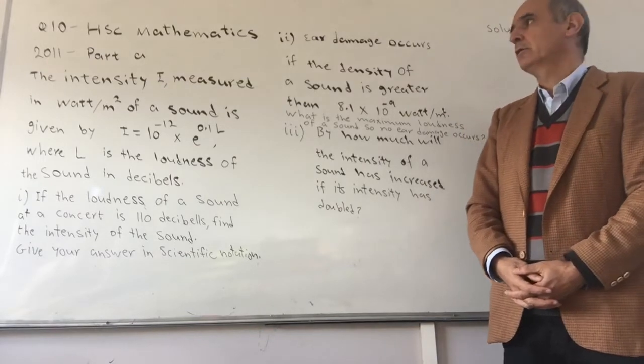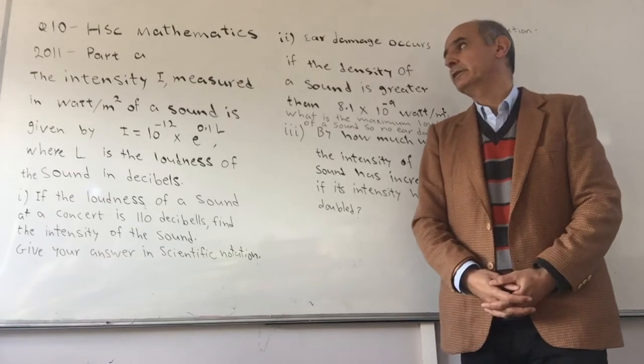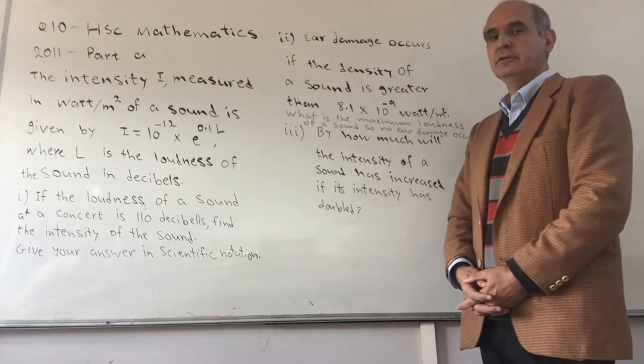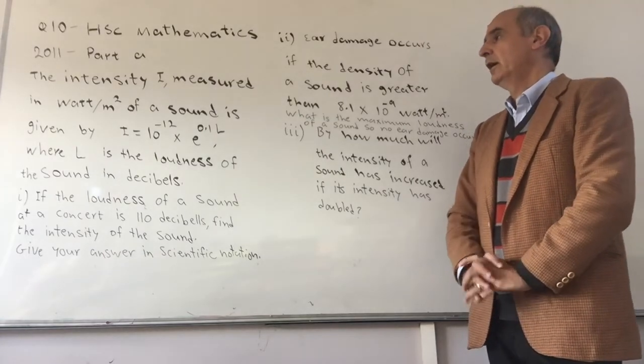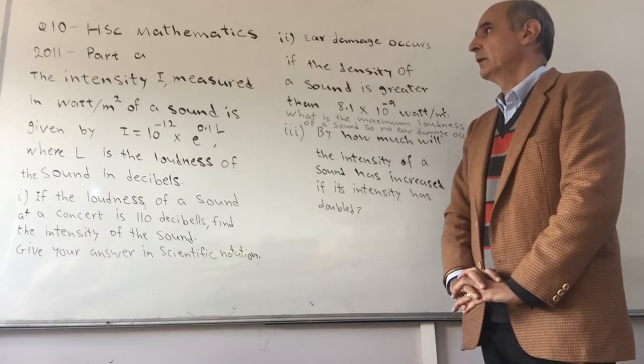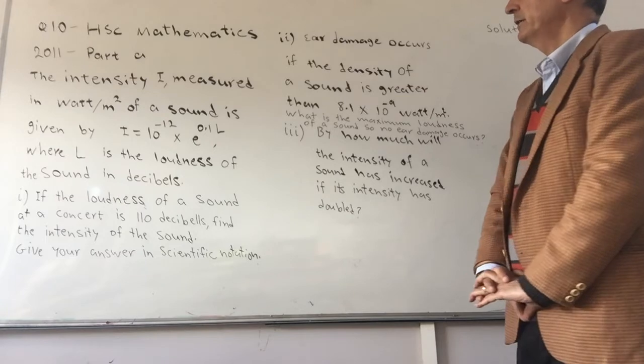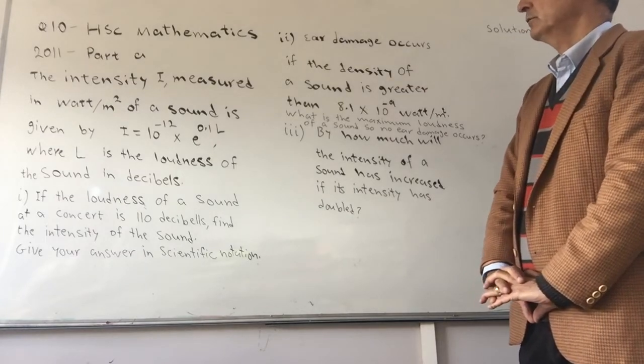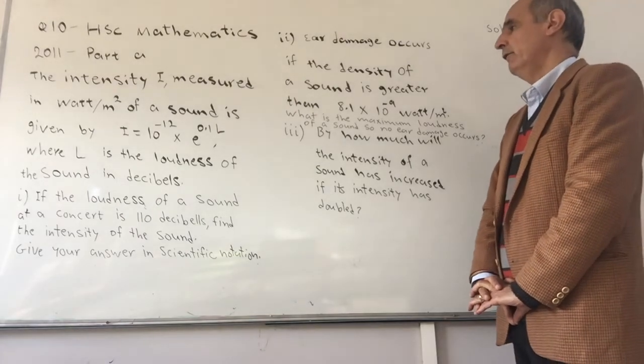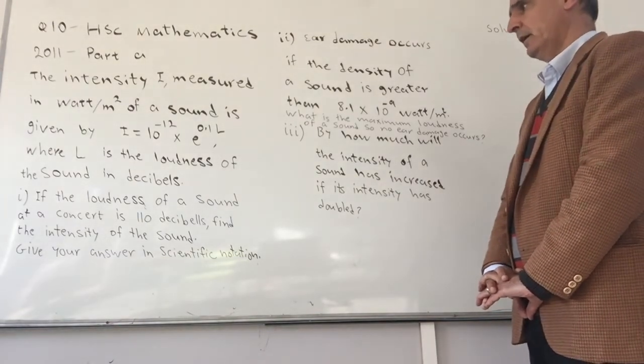Hi there, today we are looking at 2011 HSE Mathematics paper, question 10. For this paper, the last question is question 10, rather than question 16 which was the case for other papers beyond 2011. The intensity I, measured in watts per square meter of a sound, is given by I equals 10 to the minus 12 times e to the power of 0.1L, where L is the loudness of the sound in decibels.